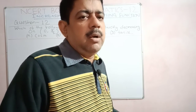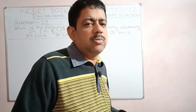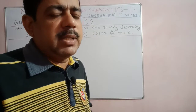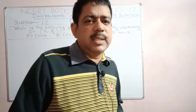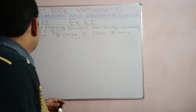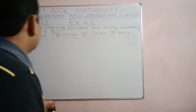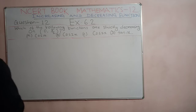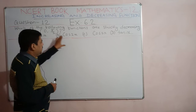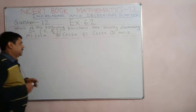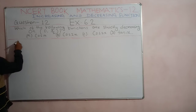Students, I am discussing question number 12 of exercise 6.2 from the NCERT mathematics class 12 book. This question is based on increasing and decreasing functions. The question asks: which of the following functions are strictly decreasing on the open interval 0 to π/2? The first function is cos x, the second is cos 2x, the third is cos 3x, and the fourth is tan x.